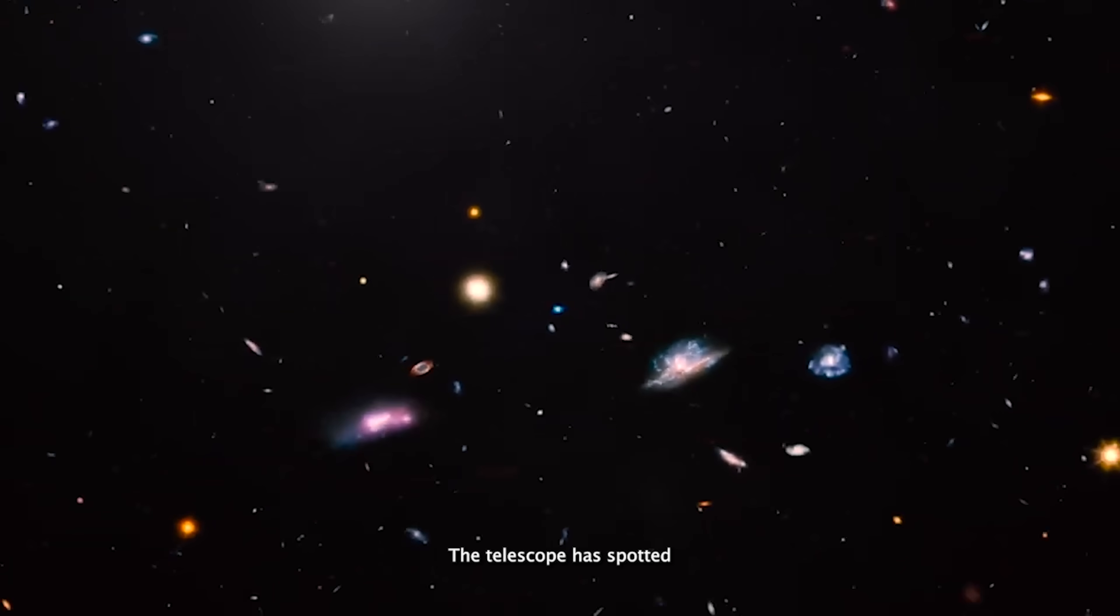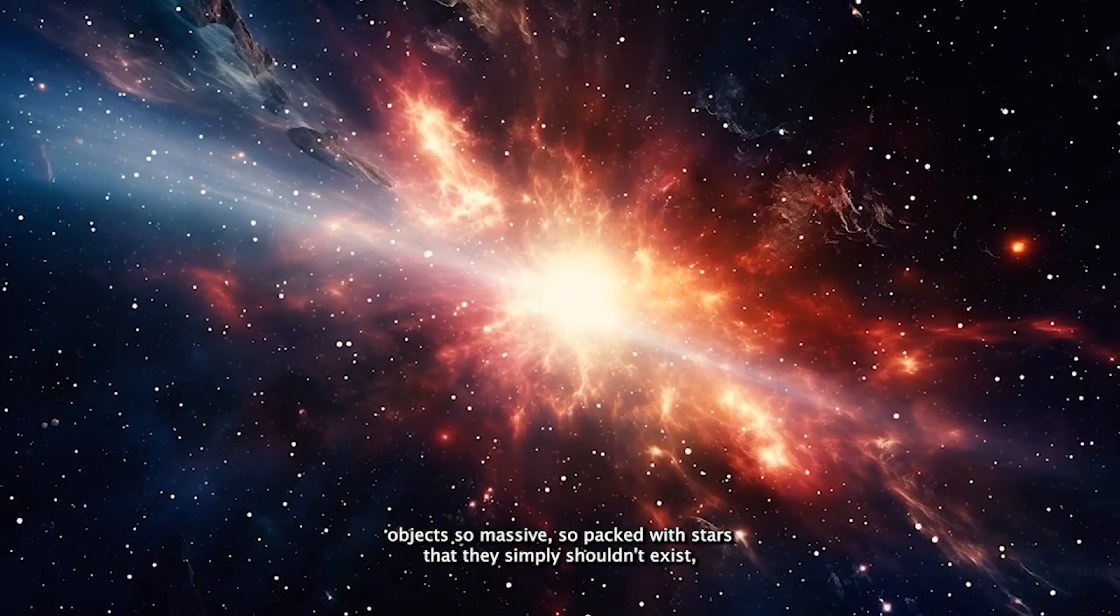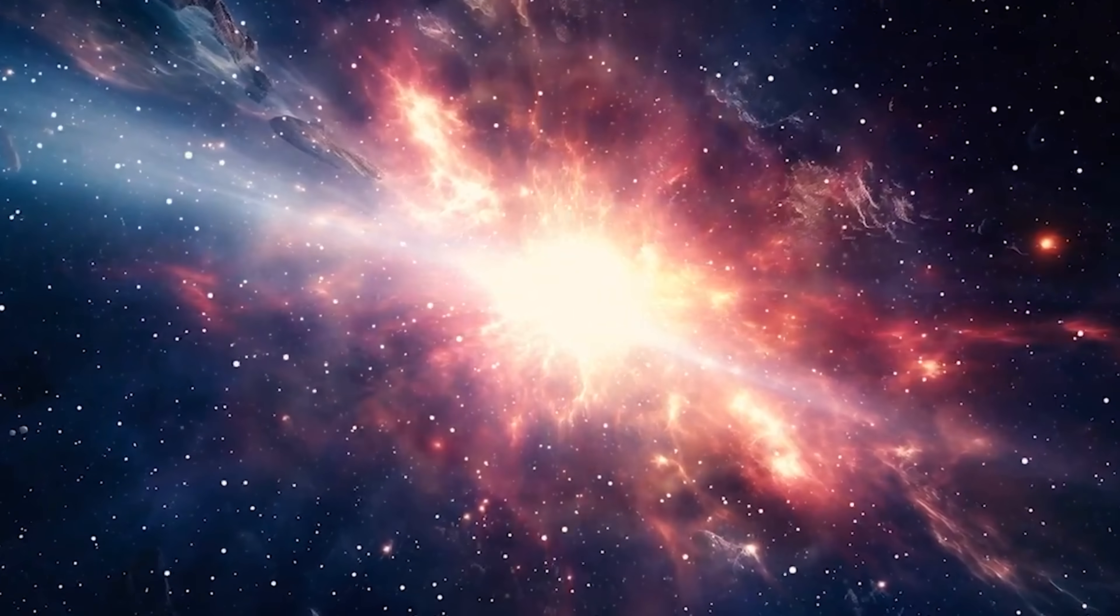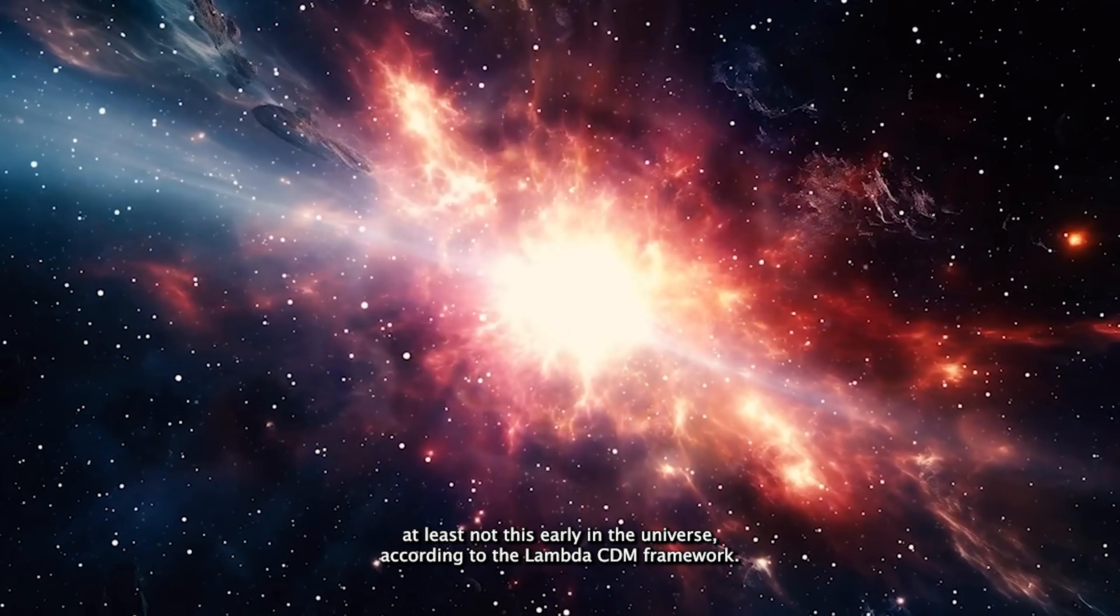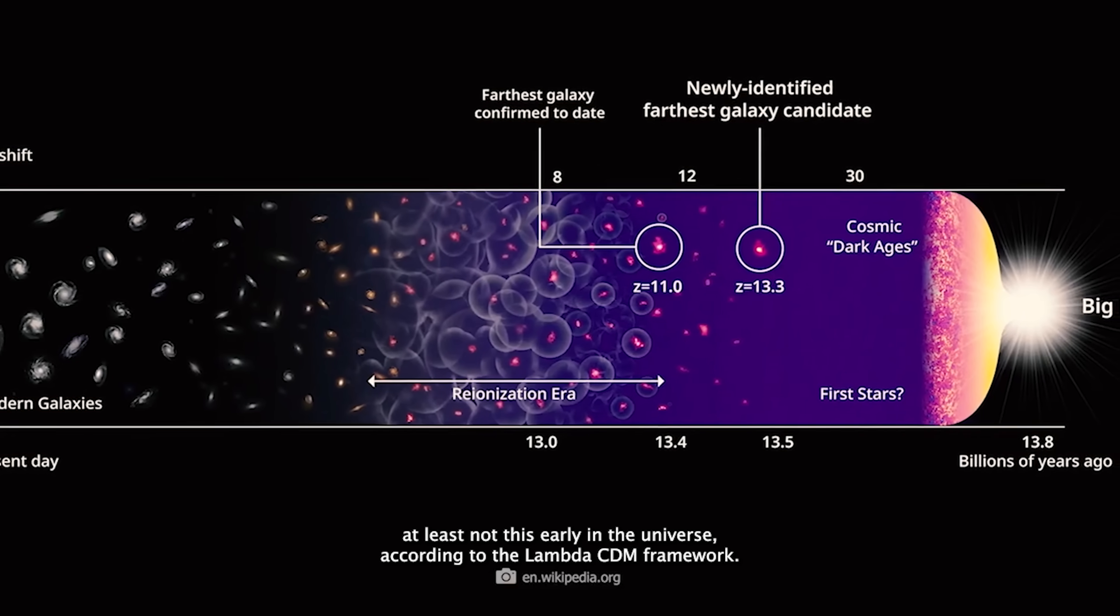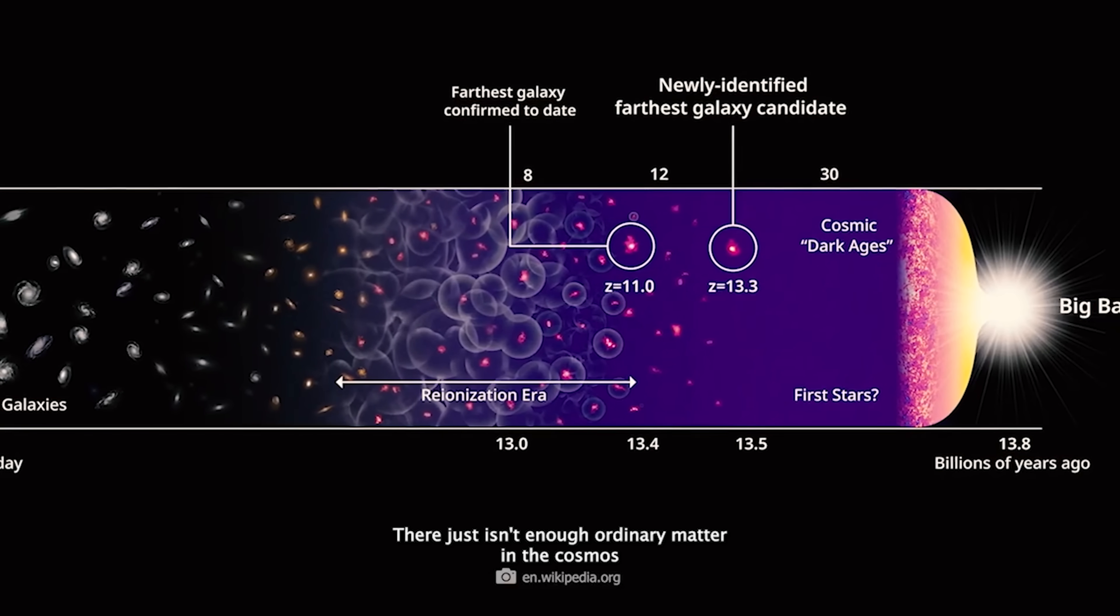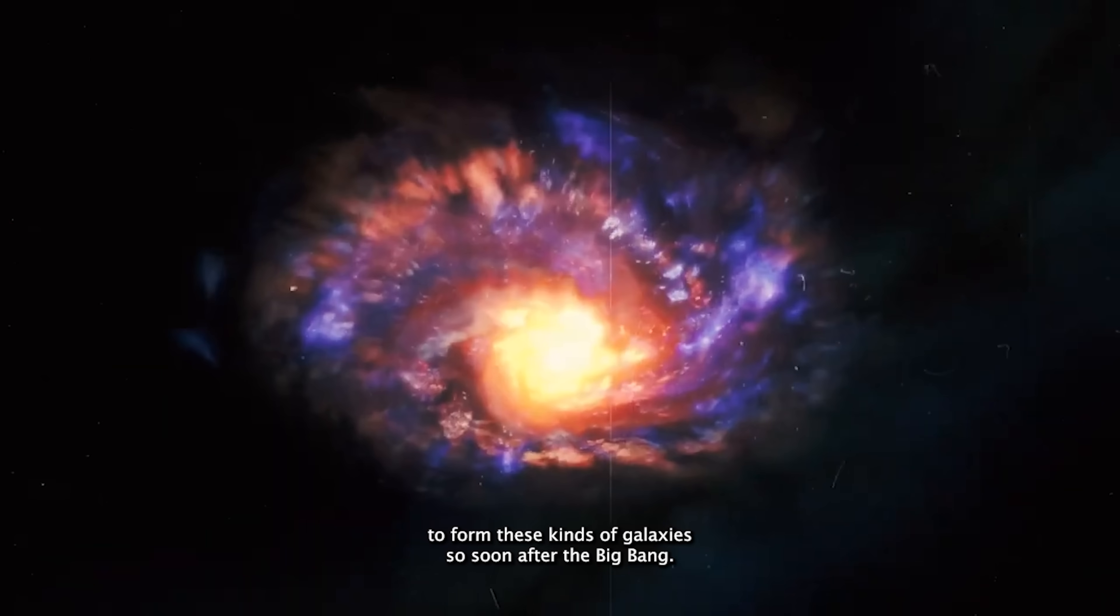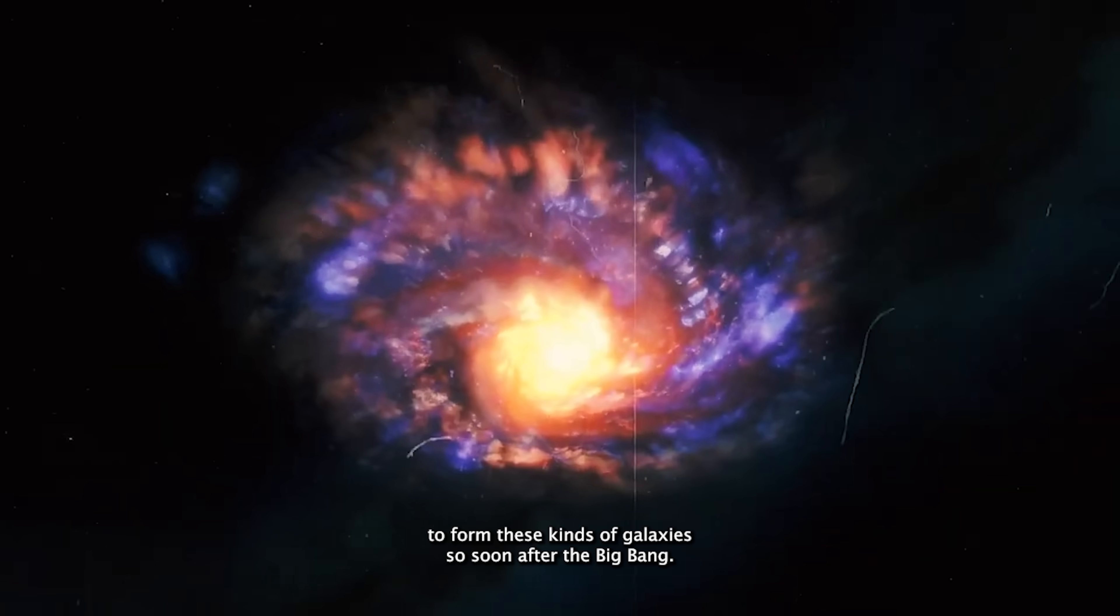The telescope has spotted objects so massive, so packed with stars, that they simply shouldn't exist. At least not this early in the universe. According to the Lambda CDM framework, there just isn't enough ordinary matter in the cosmos to form these kinds of galaxies so soon after the Big Bang.